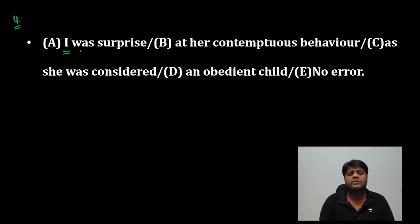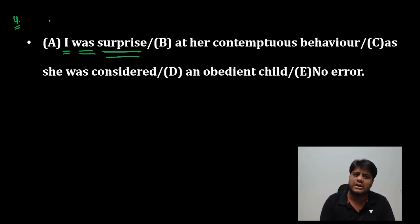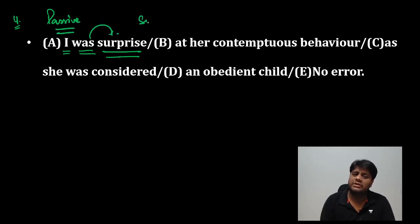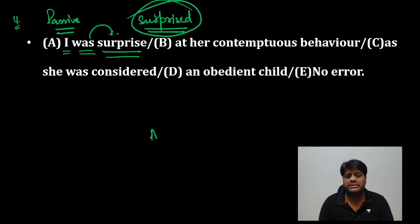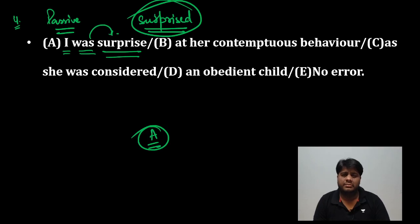Question number 4: 'I was surprise.' यहीं पर रुक जाओ — मैं surprised हो गया, यहाँ पर voice passive रहेगी। Was के साथ third form clearly चाहिए — 'surprised'। Answer A part है — over and out!